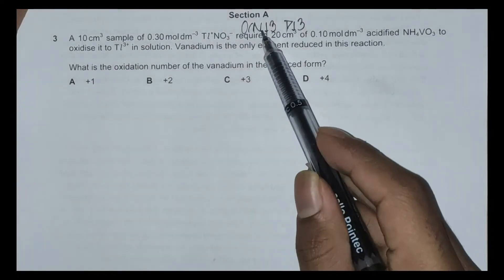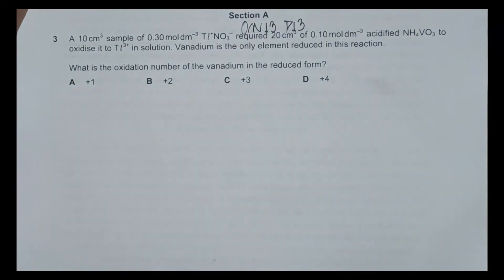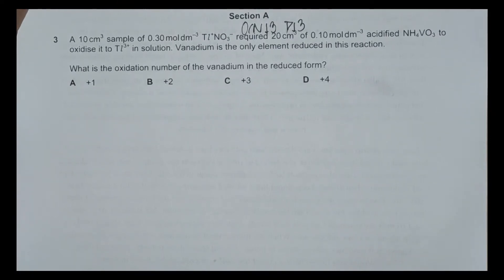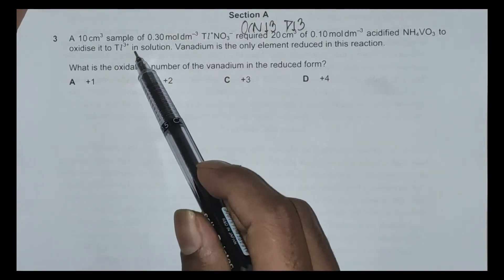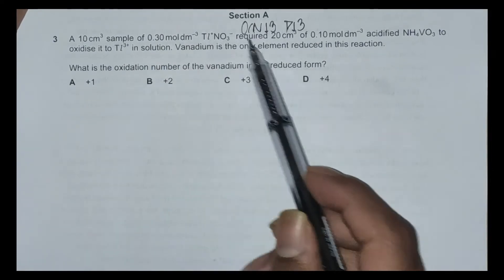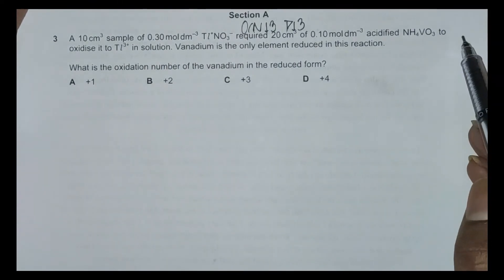Hello everyone, this is the November 13th question paper 1, question number 3. This question is concerned with the chapter redox reactions. The question is: a 10 cm³ sample of 0.3 mol per dm³ TL⁺NO₃⁻